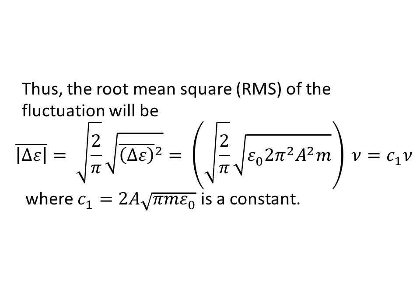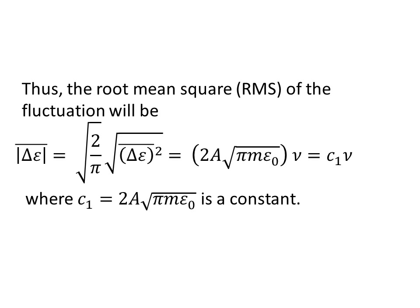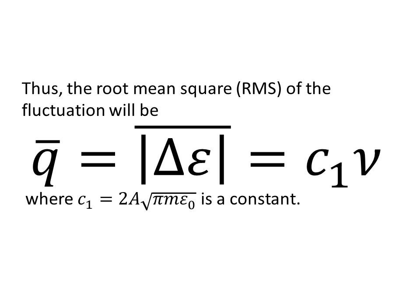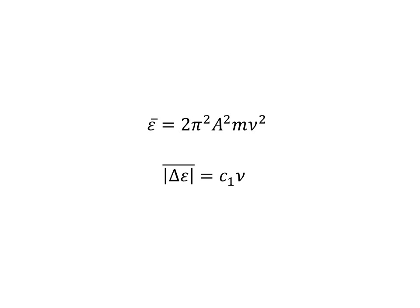Thus, the root mean square RMS of the fluctuation will be as shown. So, now we know what the expression for the average energy of one individual oscillator is.